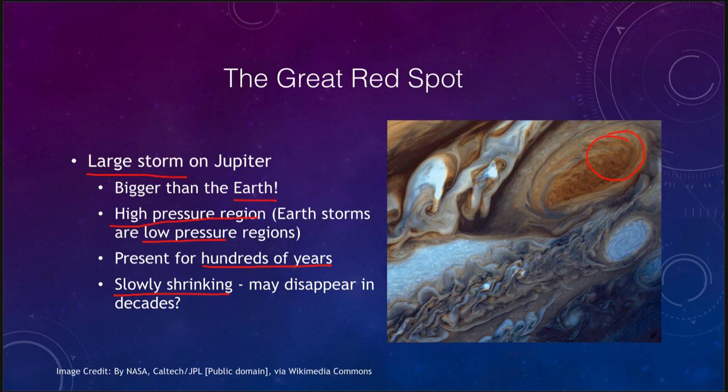If the Great Red Spot continues shrinking at its current pace it could be gone within decades. We don't know whether it will continue at the same rate, whether the rate will accelerate as it gets smaller and it will quickly disappear, or whether something will stabilize it and allow it to continue. But measurements over the past few decades have shown it is very significantly changing in size.